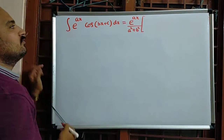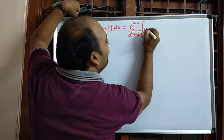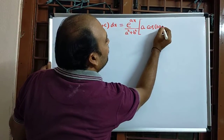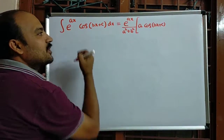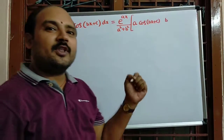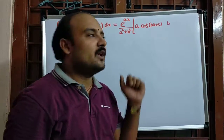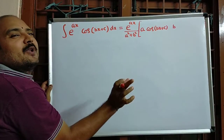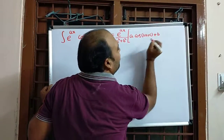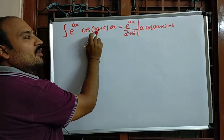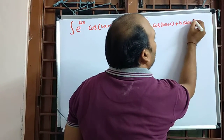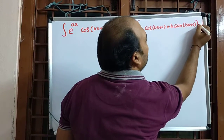Inside the bracket: the x-coefficient 'a' multiplied by cos(bx + c), then plus (since the integral of cos is plus sin), followed by the x-coefficient 'b' multiplied by sin(bx + c), plus k. The formula is e^(ax) / (a² + b²) · [a·cos(bx+c) + b·sin(bx+c)] + k.